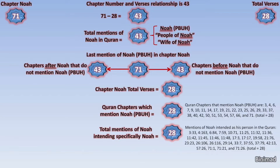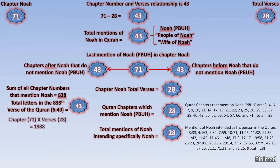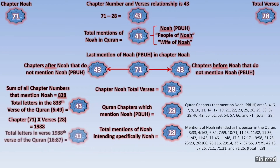Adding my own observations: if we take all the chapters that mentioned Nuh and add their chapter numbers, we get 838. Amazingly, the 838th verse in the Quran is 43 letters. Then when I multiply the chapter number by its total verse count — 71 times 28 equals 1988 — the 1988th verse from the start of the Quran also has 43 letters. Furthermore, 71 is not just a factor of 1988, but also its greatest prime factor, and of course the number of Chapter Nuh.